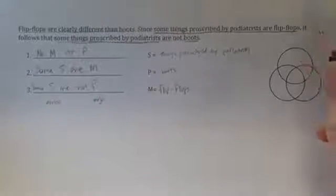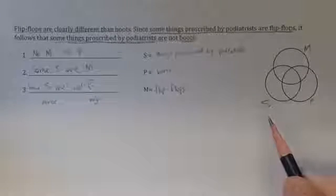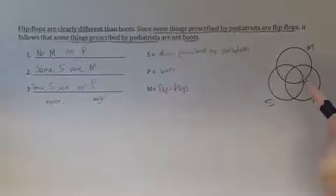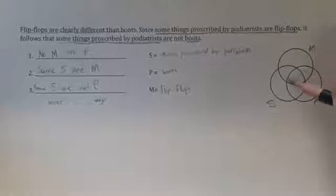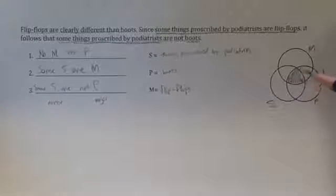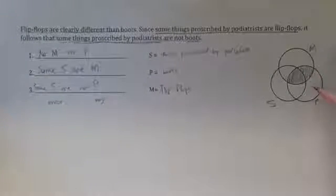Now we check to see whether it's valid. As a matter of convention, we label the categories S, P, and M like this. And I'm going to start with my universal premises. You diagram a universal premise first. So no M are P is diagrammed in this way. I'm excluding from possibility any M that is also a P.